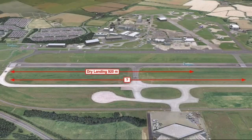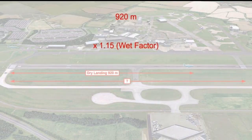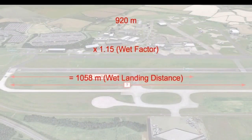For example, if the dry landing distance for a turbojet engine is 920 meters, what is the minimum landing distance available if the runway is wet? The dry landing distance is increased by 15%: multiplying 920 meters by 1.15 gives a wet landing distance of 1058 meters, which is the minimum landing distance required on a wet runway.